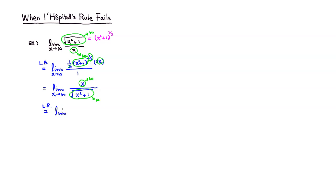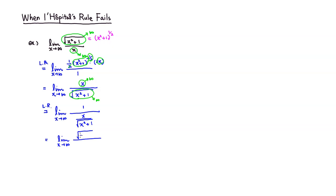So you have the limit as x approaches infinity. The derivative of the top is 1, and the derivative of the bottom — you get exactly the same thing. So you're going to get x over square root of x squared plus 1, because that's the same derivative as before. If you clean it up, you get the limit as x approaches infinity of the square root of x squared plus 1 over x.